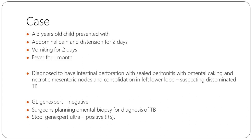I wanted to discuss a child currently in the hospital — a three-year-old with abdominal pain, distension, vomiting, and fever. He was in the surgical ward with a perforation, peritonitis, omental caking, necrotic mesenteric nodes, and consolidation — suspected disseminated TB. His gastric lavage came negative. The surgeon wanted an open omental biopsy, but we said let's try a non-invasive stool GeneXpert Ultra first. The stool came positive and rifampicin sensitive. So we got away with a non-invasive test rather than doing an invasive one — but to take that call you will need some consultation.